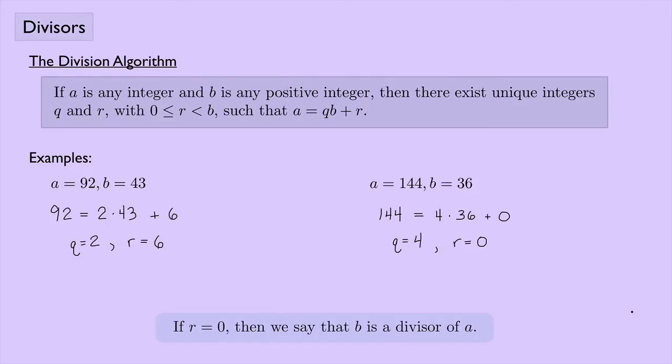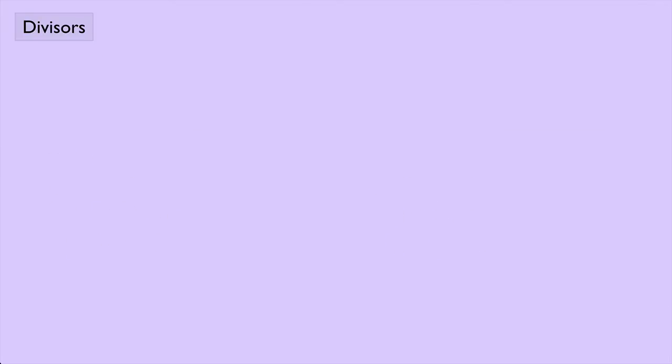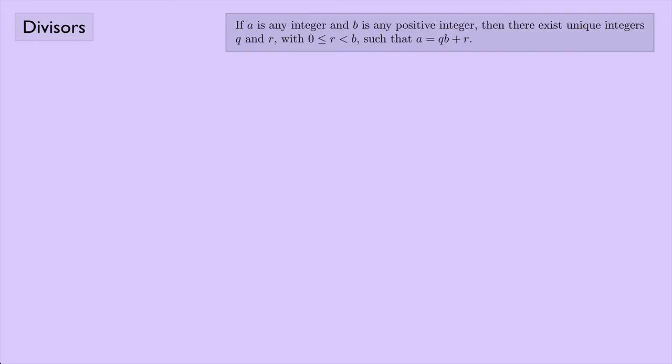If R = 0, then we say that B is a divisor of A. Now we introduce the concept of a divisor formally. Let A and D be any two integers. Notice that we write A = QD, whereas in the division algorithm we had A = QB.